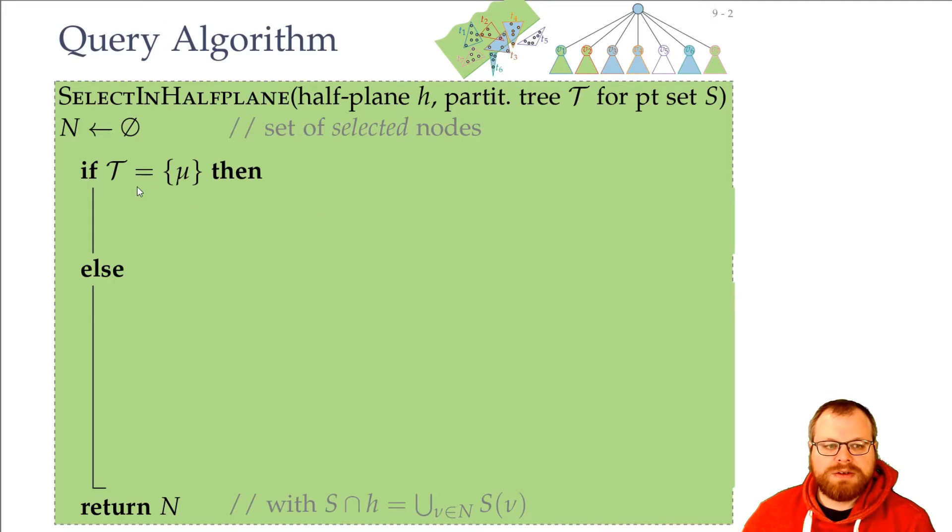So what do we have to do? If we are at a leaf, we only have exactly one node left, then we just check: does it lie in the half-plane? If yes, we add it to the set N.